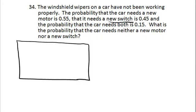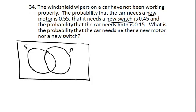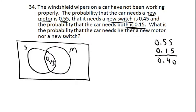There are two things going on: the possibility of needing a new switch — I'll use a circle labeled S for that — or a new motor, labeled M. The probability that it needs both is 0.15, so 0.15 goes in the overlap. The probability that it needs a new motor is 0.55, but 0.15 is already counted in the overlap, so I subtract to get 0.40, which goes in the motor-only region.